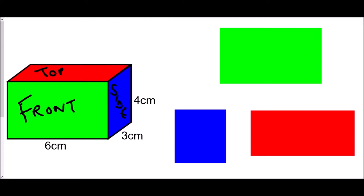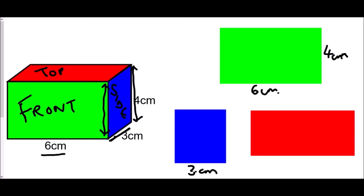First, we need to work out the dimensions. For the front green rectangle, the bottom is 6 cm. Looking at the diagram, the height must match the height shown, which is 4 cm. For the blue side rectangle, the bottom is 3 cm and the height is also 4 cm.